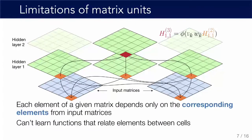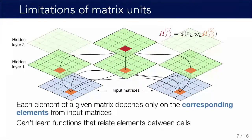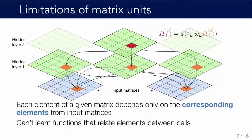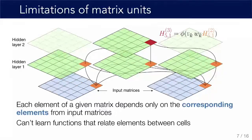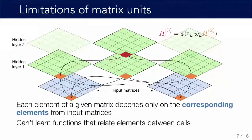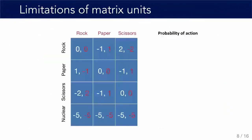But there's a limitation to this approach: we've essentially constrained each element of the hidden units to depend only on the corresponding elements from the layers below. The animation tries to show that the red element is only a function of the orange element, not any of the other elements of the input matrix. What we've done is constrain our model to treat each outcome in the game — each cell in the input matrix — as independent of each other.